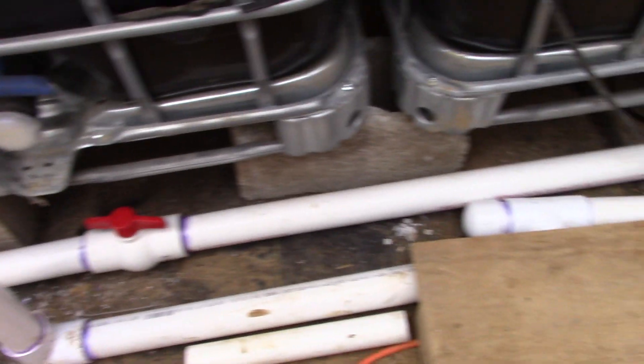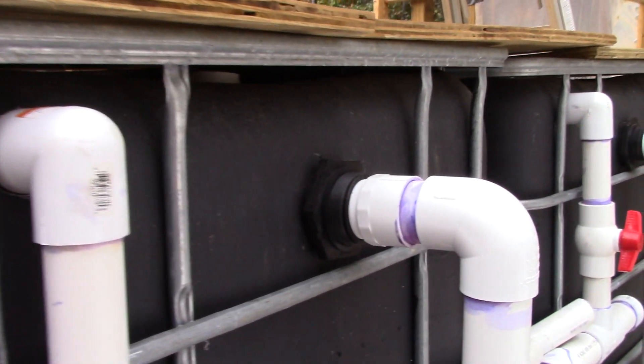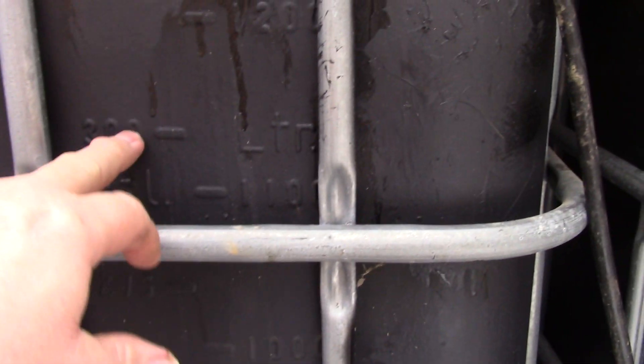There's three drains total here, one off each fish tank. These fish tanks are 330 gallons apiece with about 300 gallons of water in right now. The water level is right about here for the 300-gallon mark.